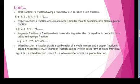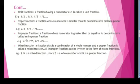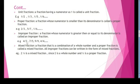Improper fraction: a fraction whose numerator is greater than or equal to its denominator is called an improper fraction. For example, 4 by 3 — numerator 4 is greater than denominator 3. 7 by 5 — numerator 7 is greater than denominator 5. So both are improper fractions.